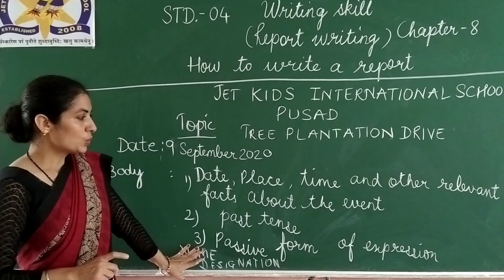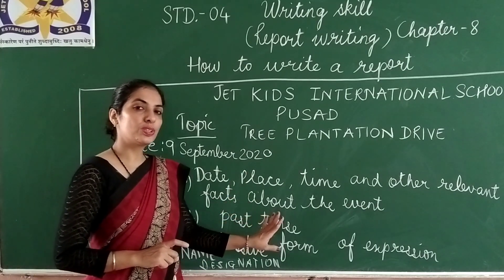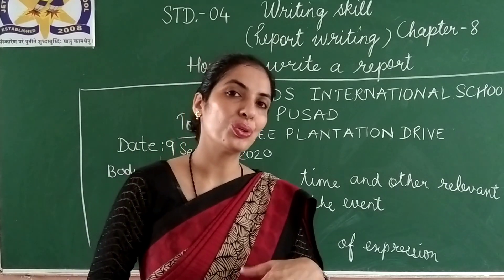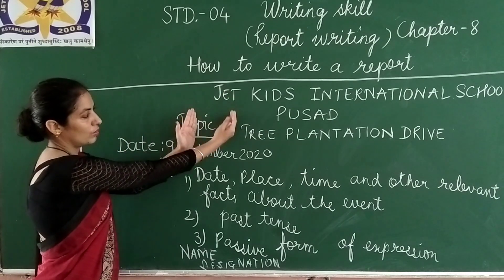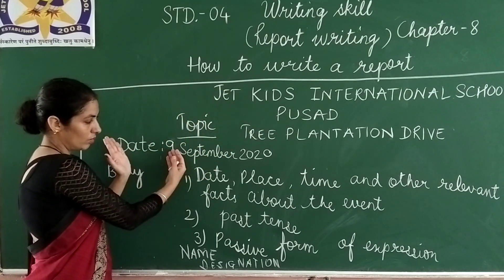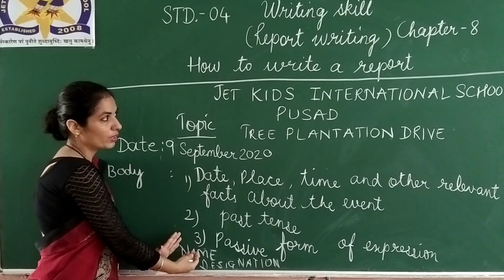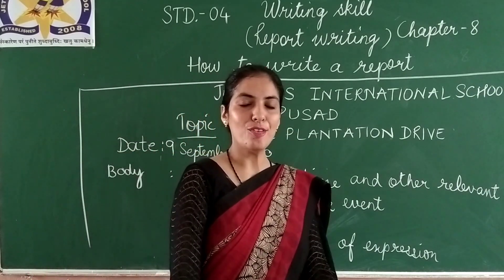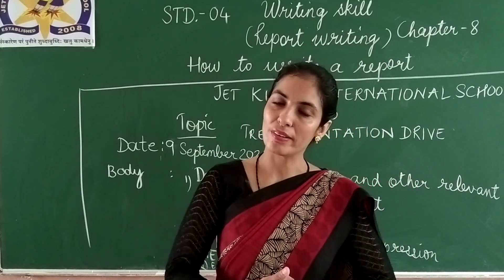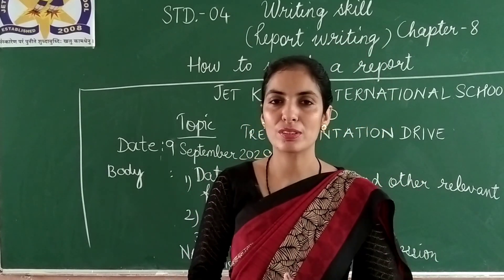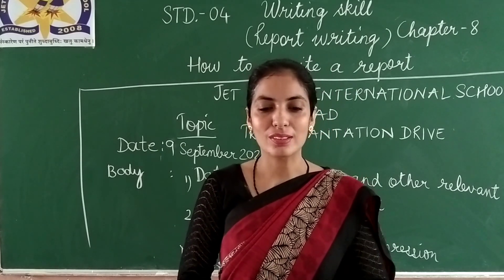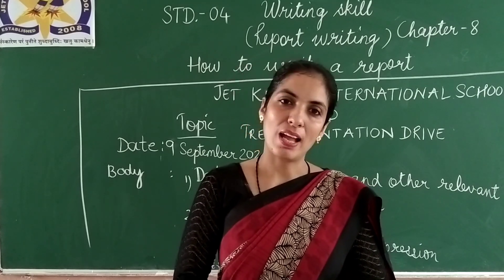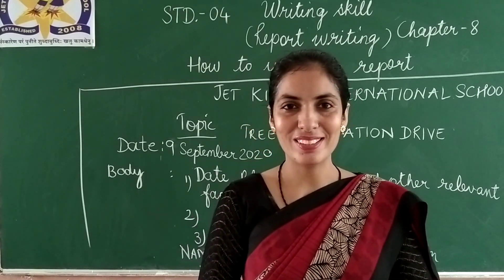So this way you can write the report, which is given at page number 80. Here is the starting part, here is the body, and this way we have finished learning about report writing. This is a formal report for a school event. I hope that you would write the report independently and I will check your responses. Stay blessed. Bye-bye.